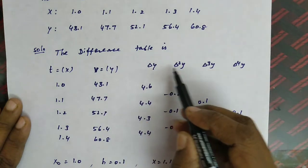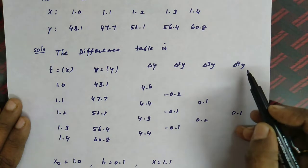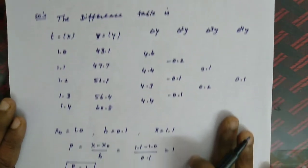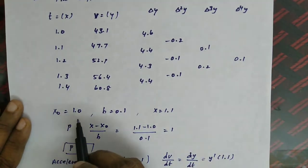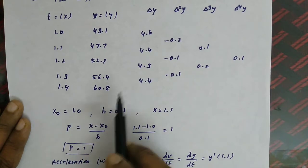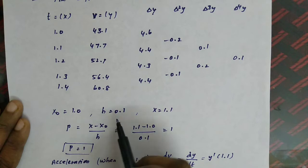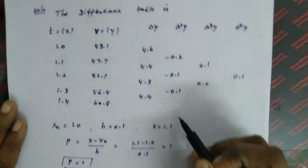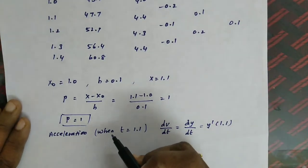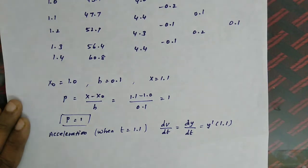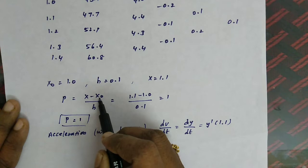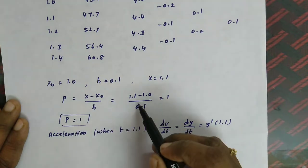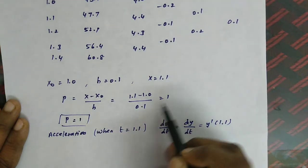We form the difference table using t and v values. The Δ⁴ answer comes out to 0.1, so we stop the difference table at Δ⁴. From the given data, x₀ is 1.0 and h is 0.1. We need to find acceleration at t equal to 1.1, so our x is 1.1. Computing p: p = (1.1 minus 1.0) / 0.1, which gives p equal to 1.